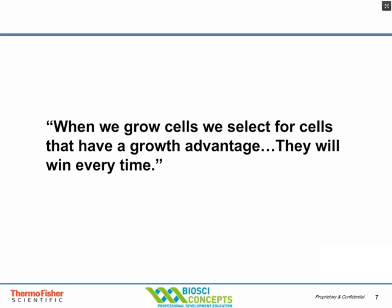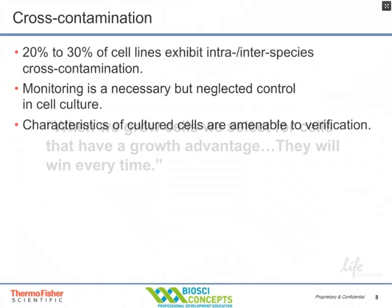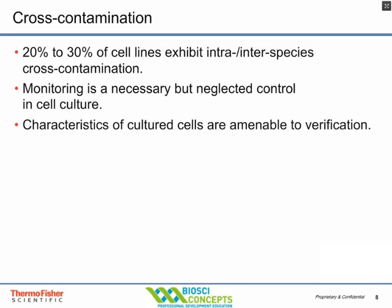When we grow cells, we select for cells that have a growth advantage, and those cells win every time. In addition to selection pressures, this is one of the reasons we have cell line cross-contamination. It's thought that about 30% of all cells used out there have intra- or inter-species cross-contamination. Intra-species contamination would be, for example, thinking you have a human lung cell when you actually have a human kidney cell. Inter-species contamination would be thinking you're using a human cell line when you're actually using a monkey cell line.